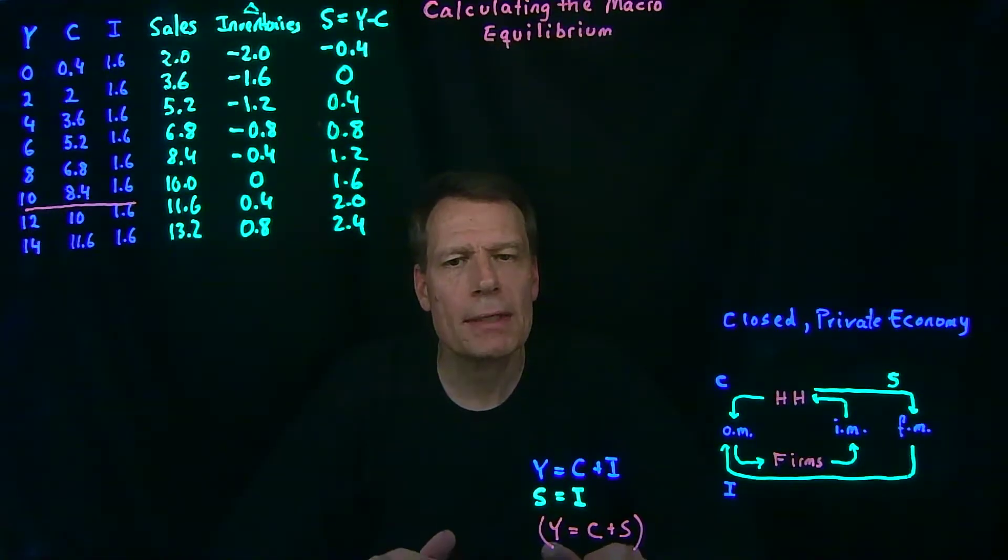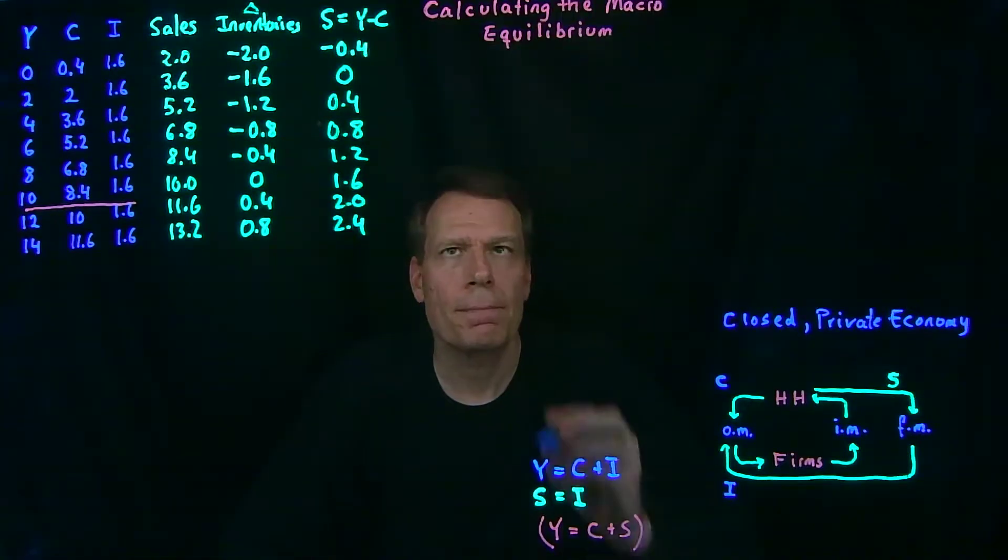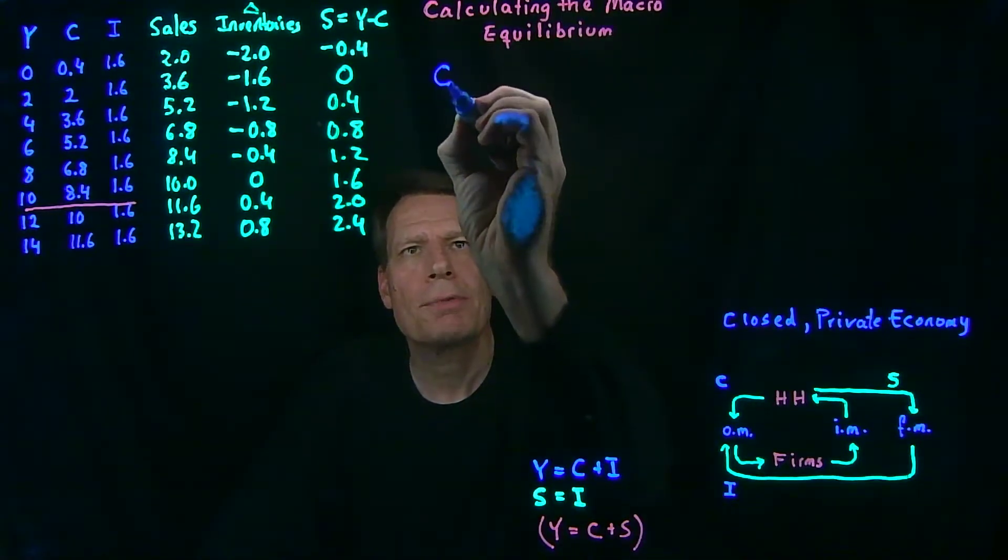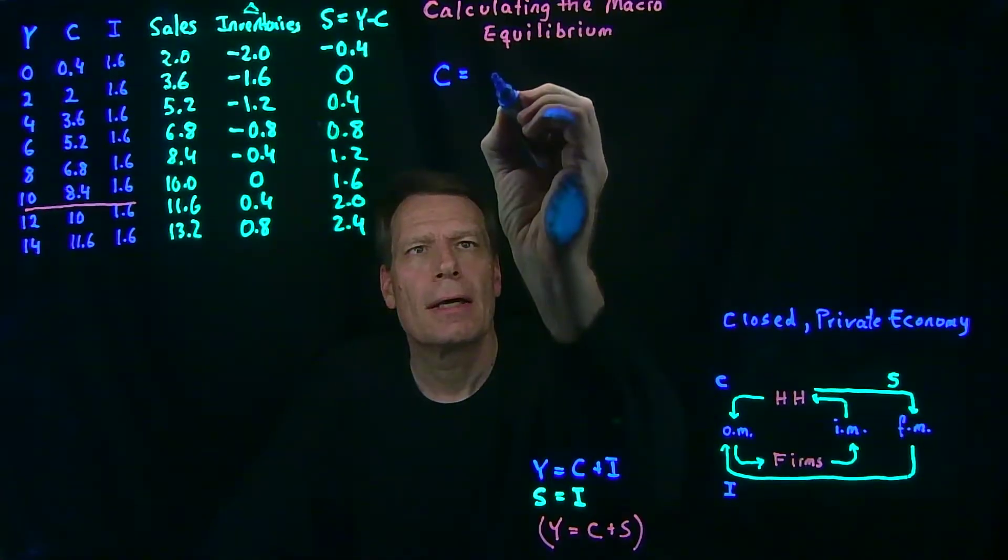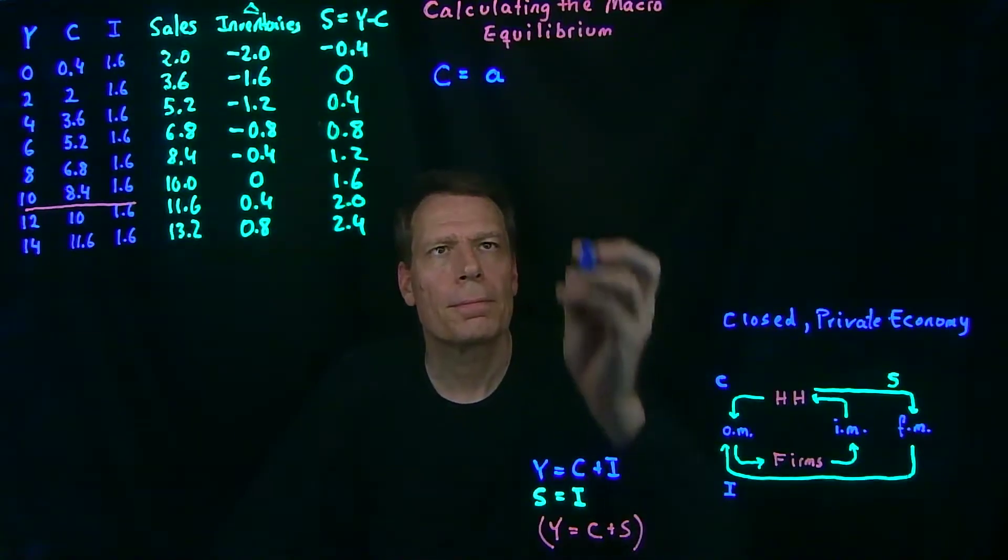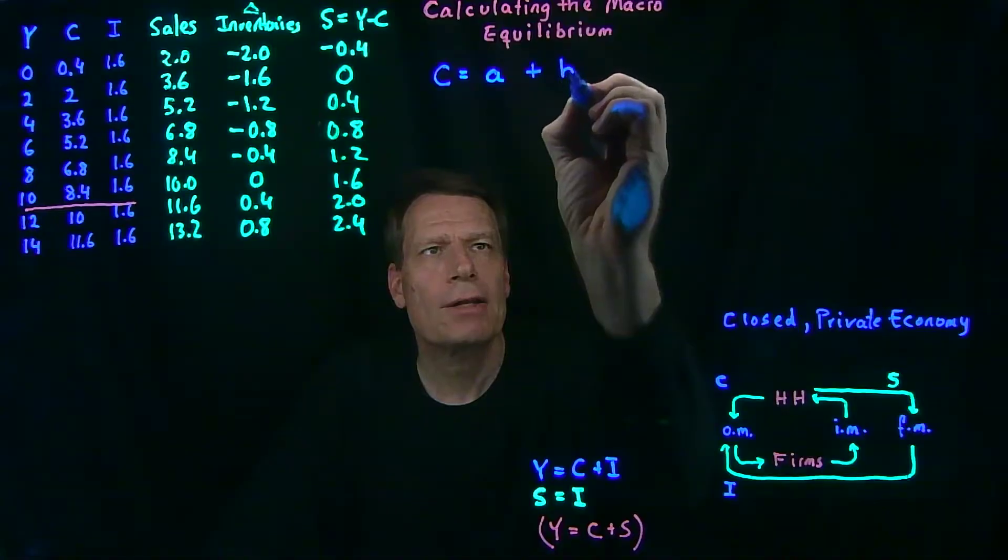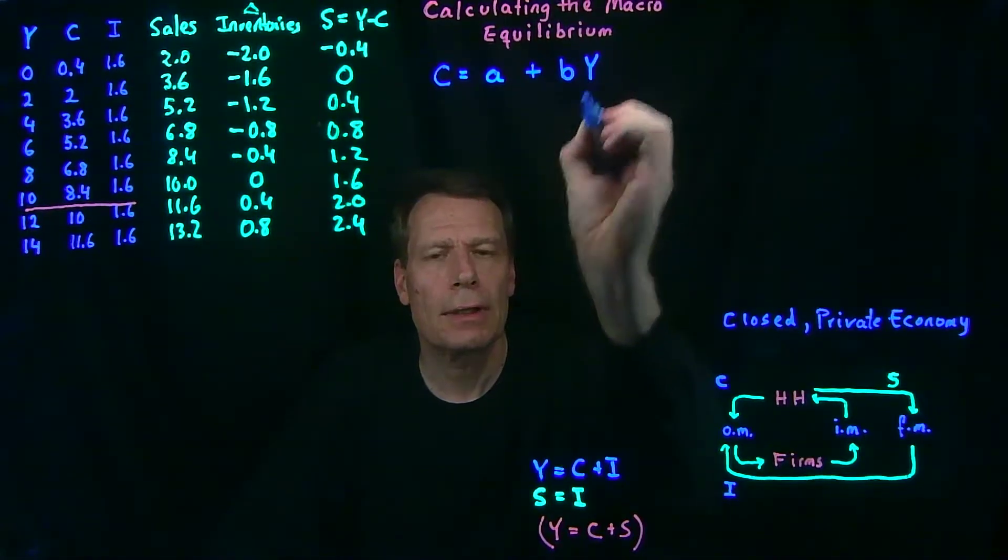In other words, we've made an assumption about how consumer behavior changes as income varies. We can represent that assumption in what we call a behavioral equation. An equation for consumption that tells us consumers are going to consume some amount A regardless of whether there's any income at all. Plus, they're going to consume some fraction B out of total income.